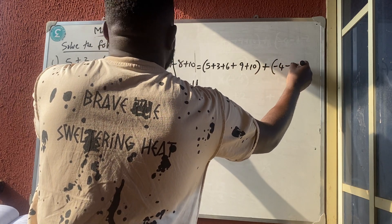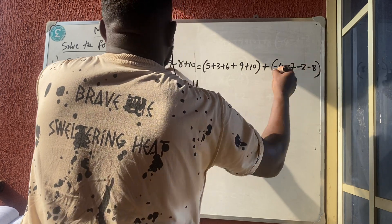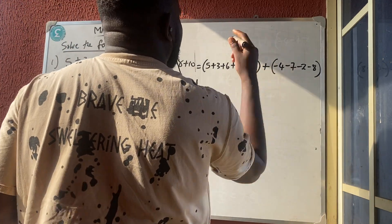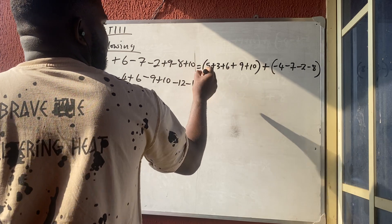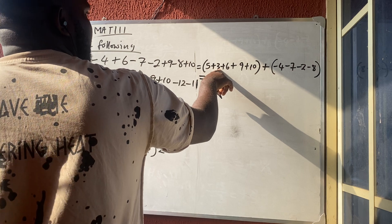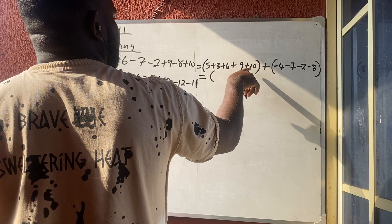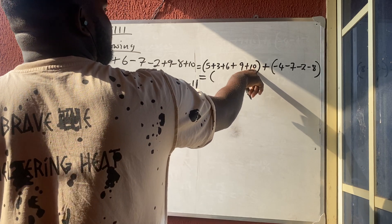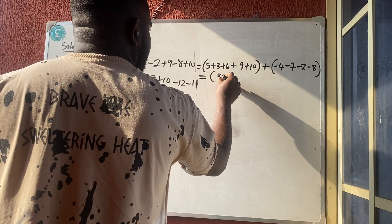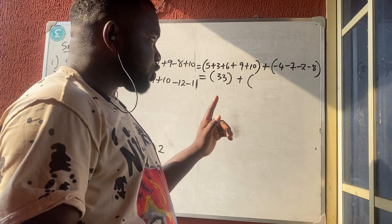Now bring in all the negatives: minus four, minus seven, minus two, and minus eight — that's four negative numbers. Adding the positives: five plus eight is thirteen, thirteen plus six is nineteen — wait, let me redo: five plus three is eight, plus six is fourteen, plus ten is twenty-four, plus nine is thirty-three. So the positive sum is 33.